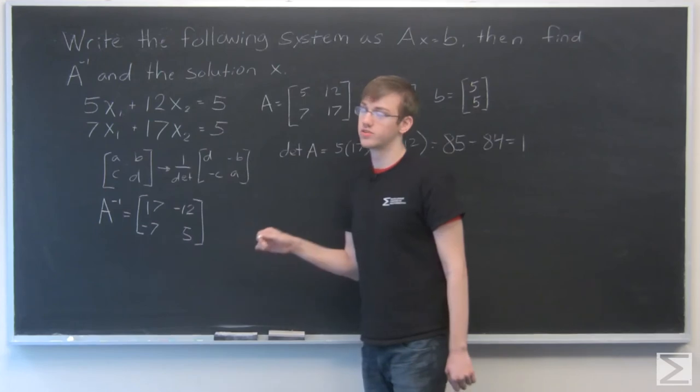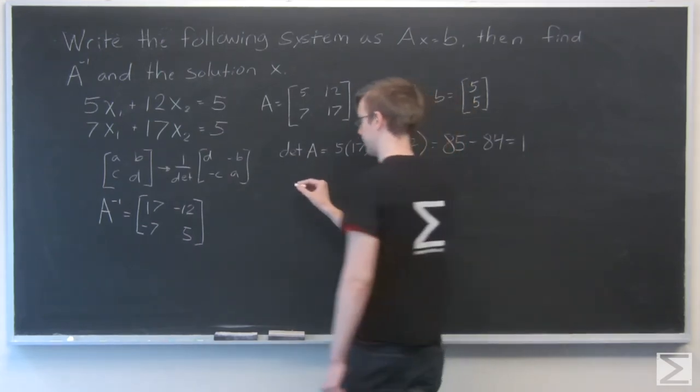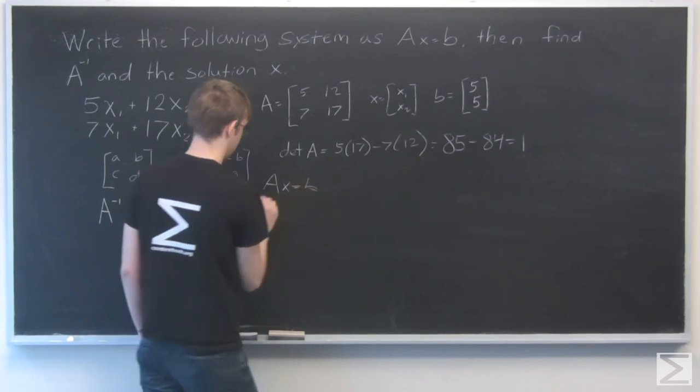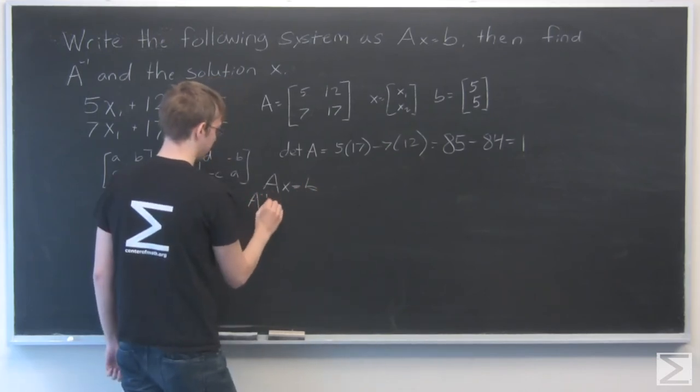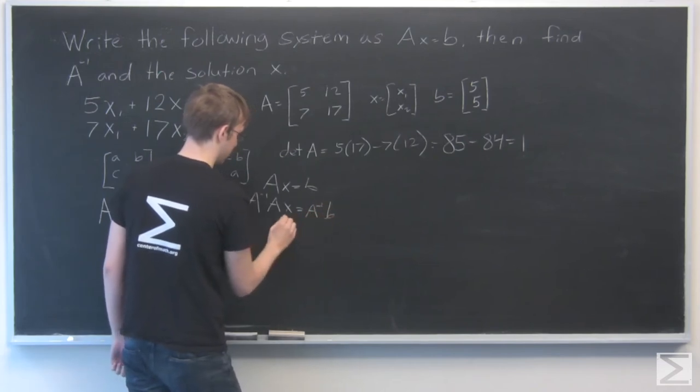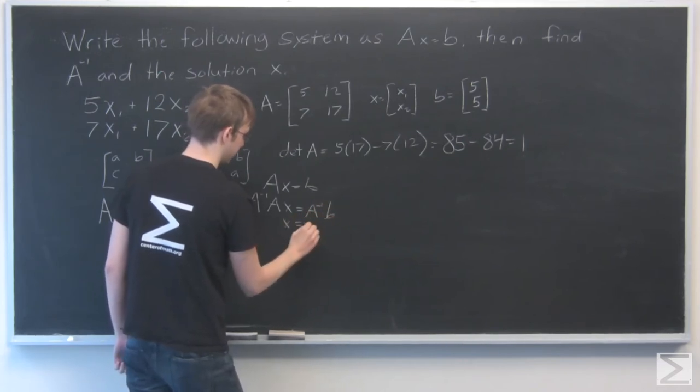Now we can use A inverse to solve for X. If we have AX equals B, multiply both sides by A inverse, and we're left with X equals A inverse B.